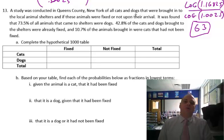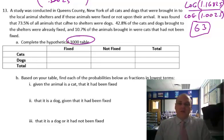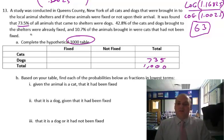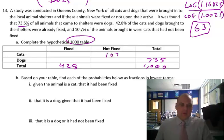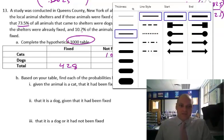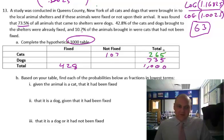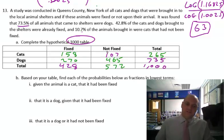A study was conducted in Queens County, New York, of all the cats and dogs brought into local animal shelters — whether they were fixed or not. We're going to fill in a hypothetical 1,000 table. 73.5% of all animals were dogs, so total dogs = 735 out of 1,000. 42.8% were already fixed, so 428 total fixed. 10.7% were cats that had not been fixed: cats not fixed = 107. From those values I can finish filling in the table: the remaining cells are 265, 158, 270, 465, 572.